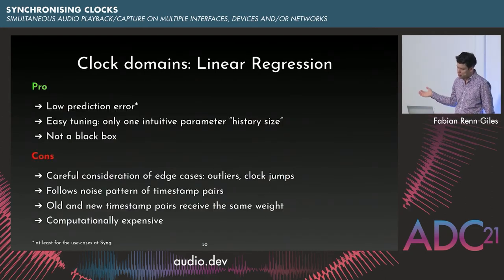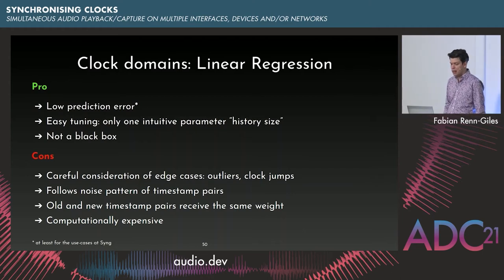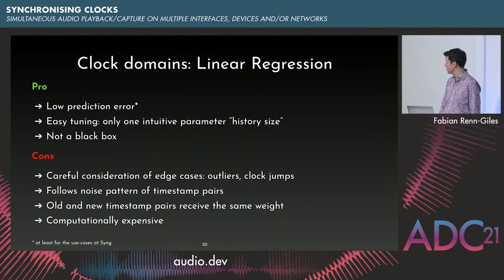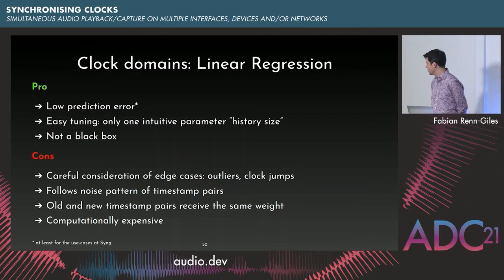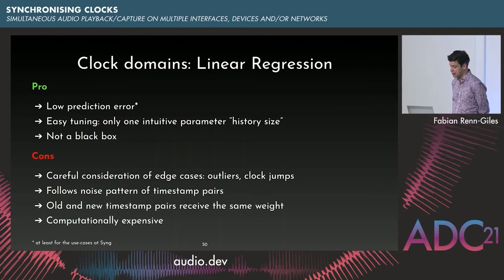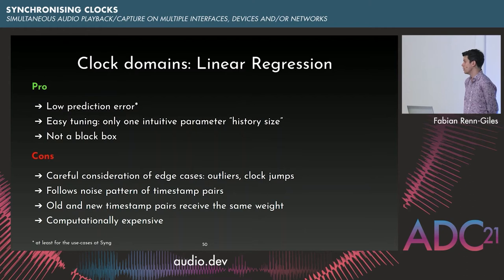As a quick summary: at Sing, linear regression gives quite good prediction and is easy to tune — just one parameter, the history/regression window size. The big con is you must handle outliers carefully. And it's computationally expensive: regressing over the last 200 samples is not a simple CPU task.